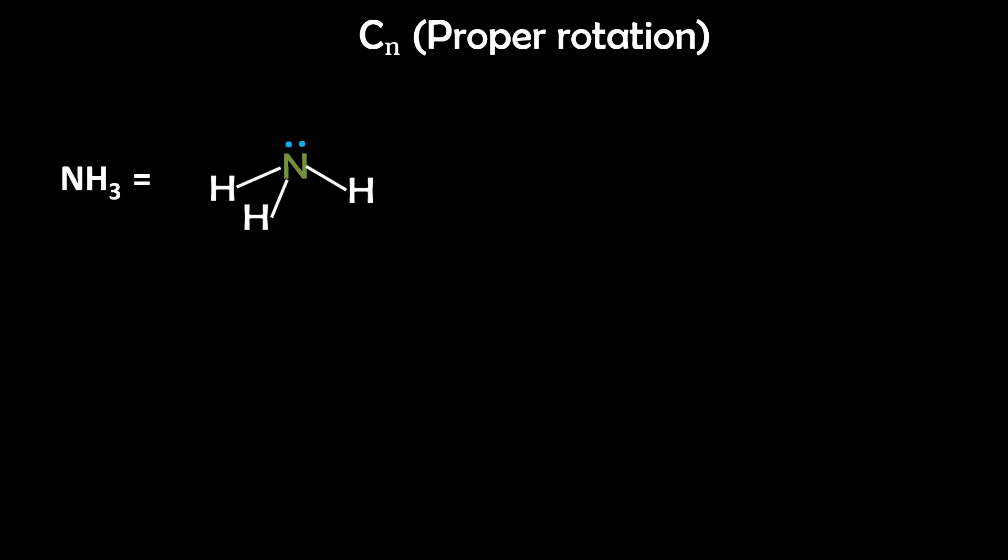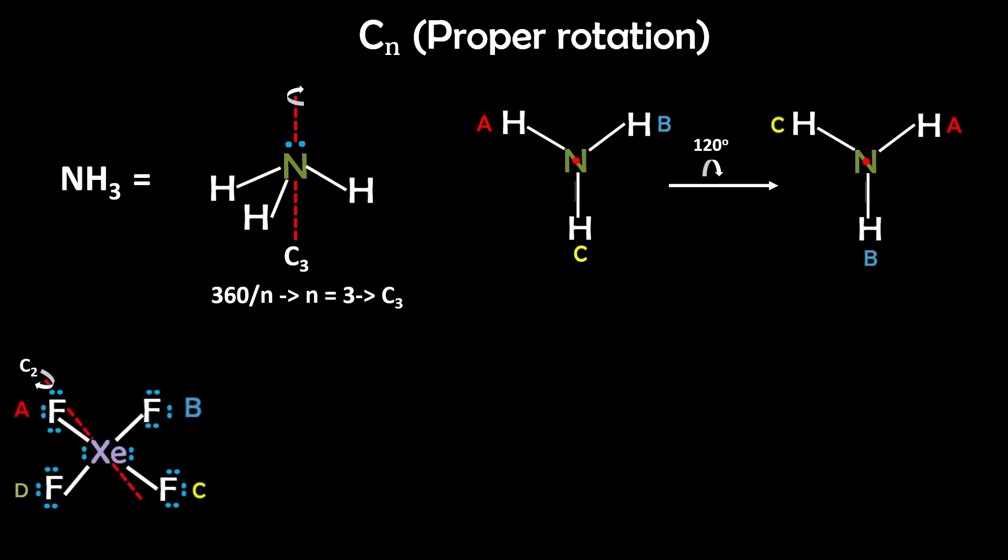Proper rotation. In ammonia, you can rotate the molecule 120 degrees, which is 360 divided by 3. So we call it a C3 rotation around the nitrogen atom. This swaps the three nitrogens into each other's positions, but the molecule still looks exactly the same. Many molecules actually have multiple rotation axes.